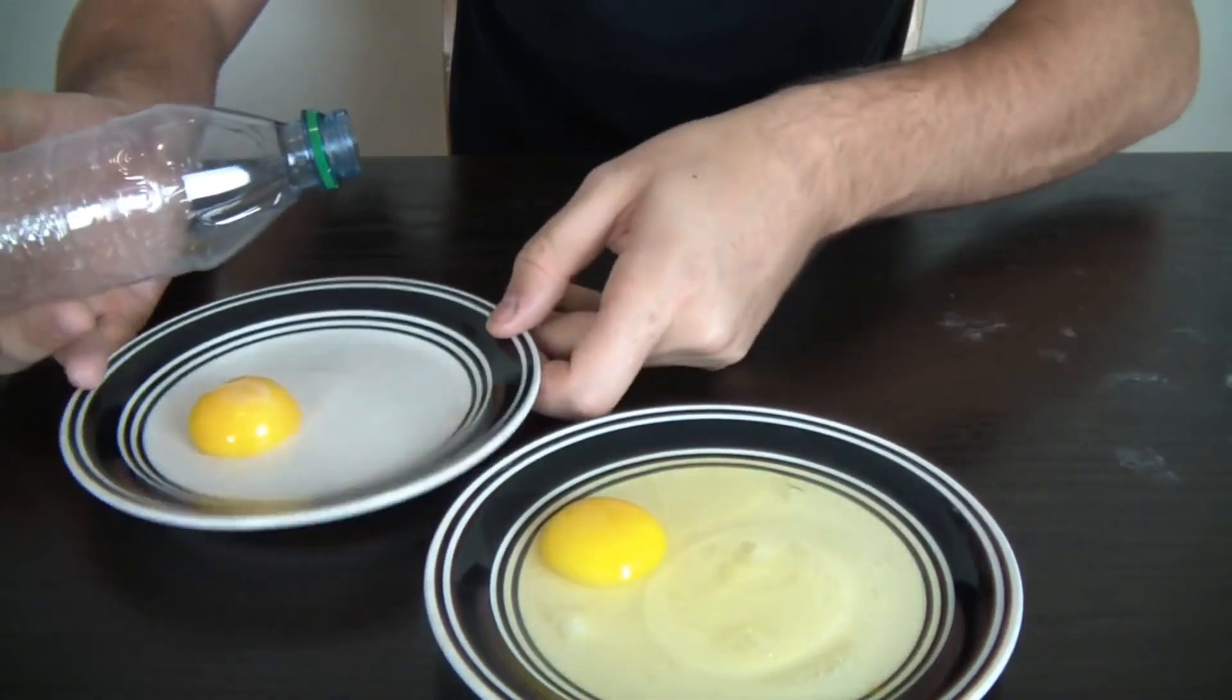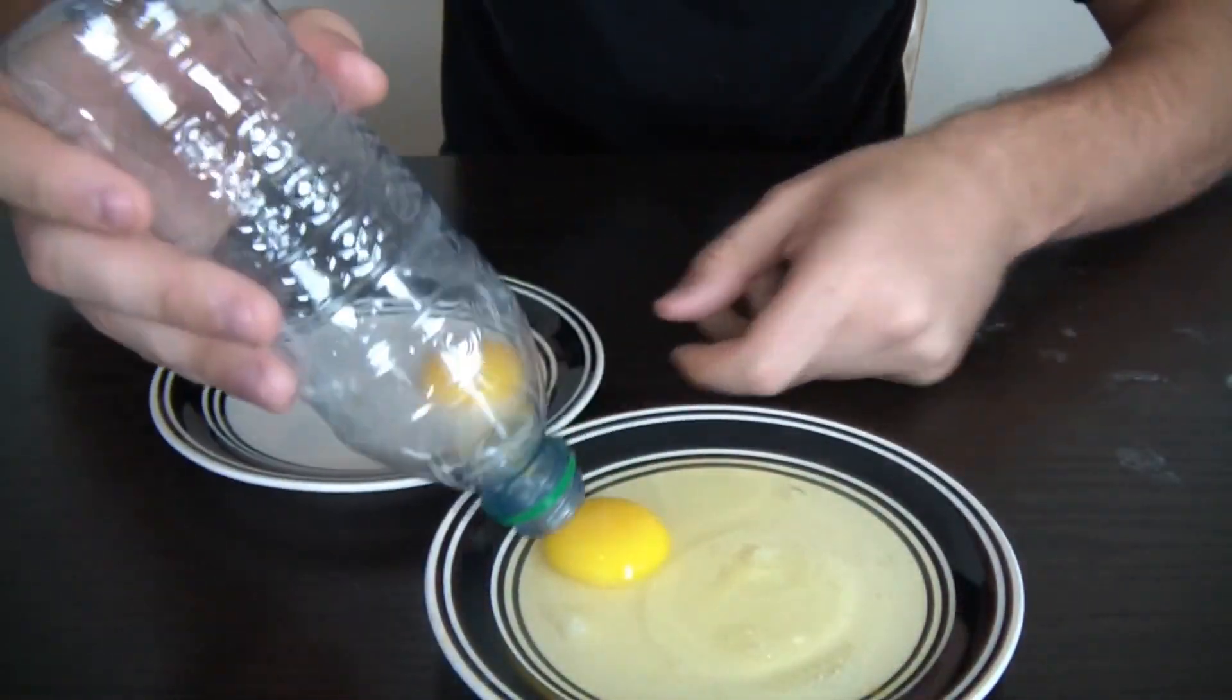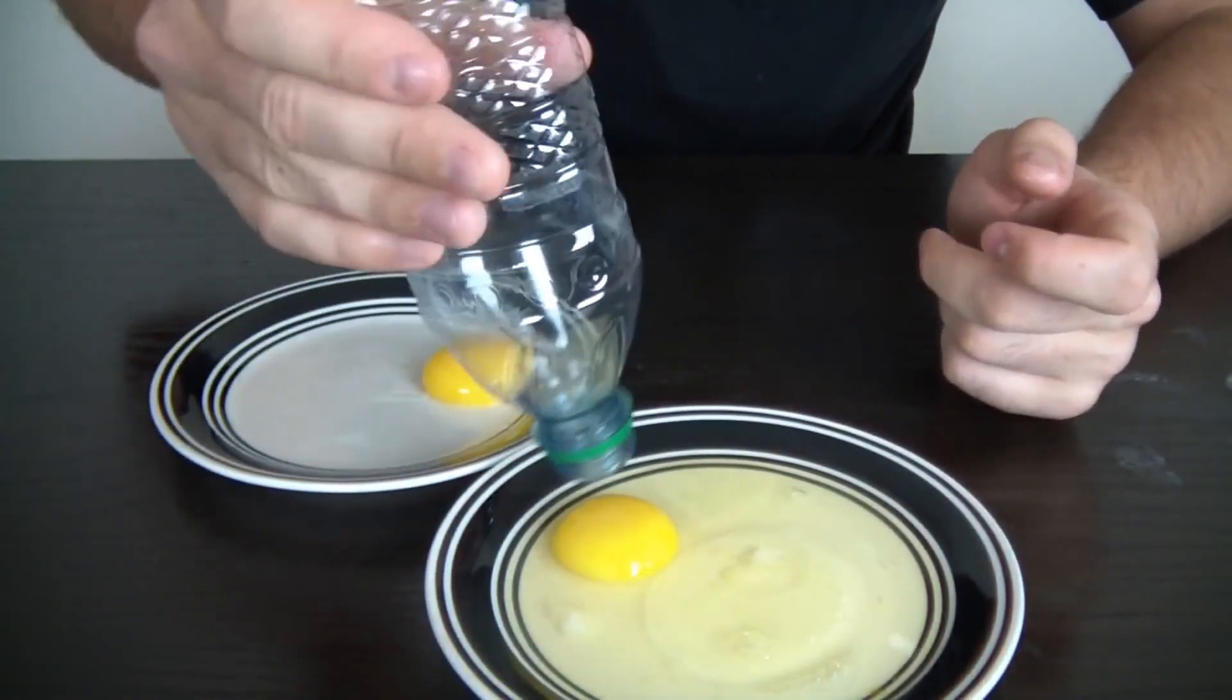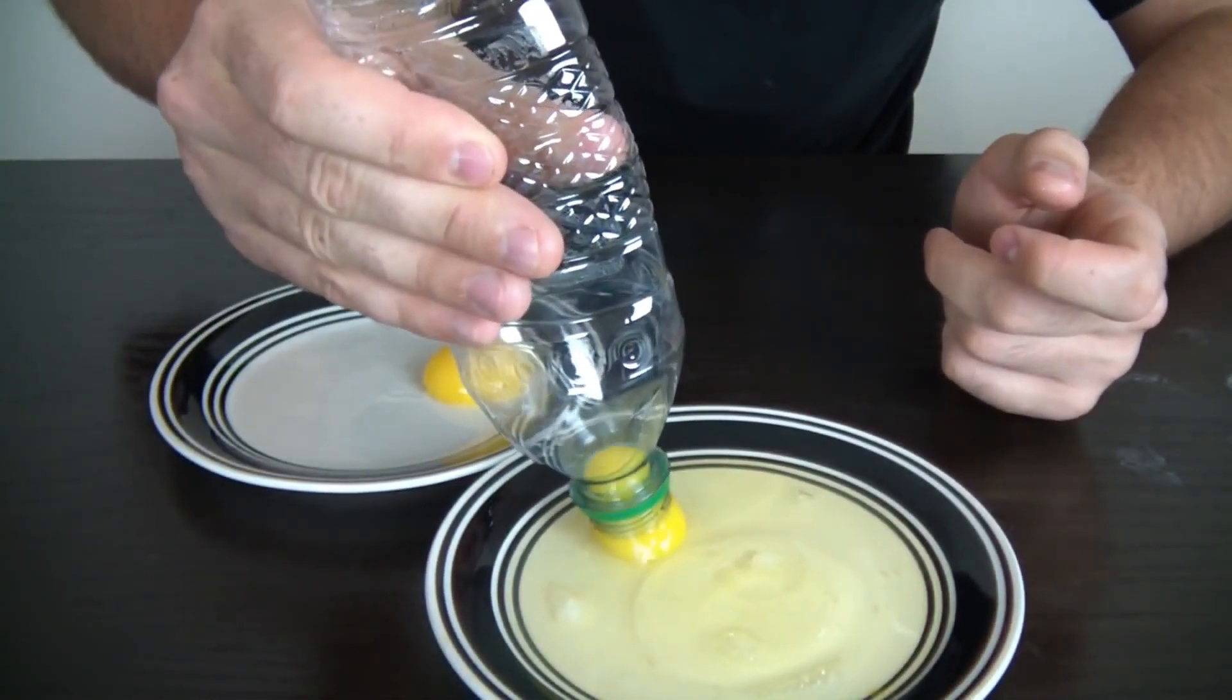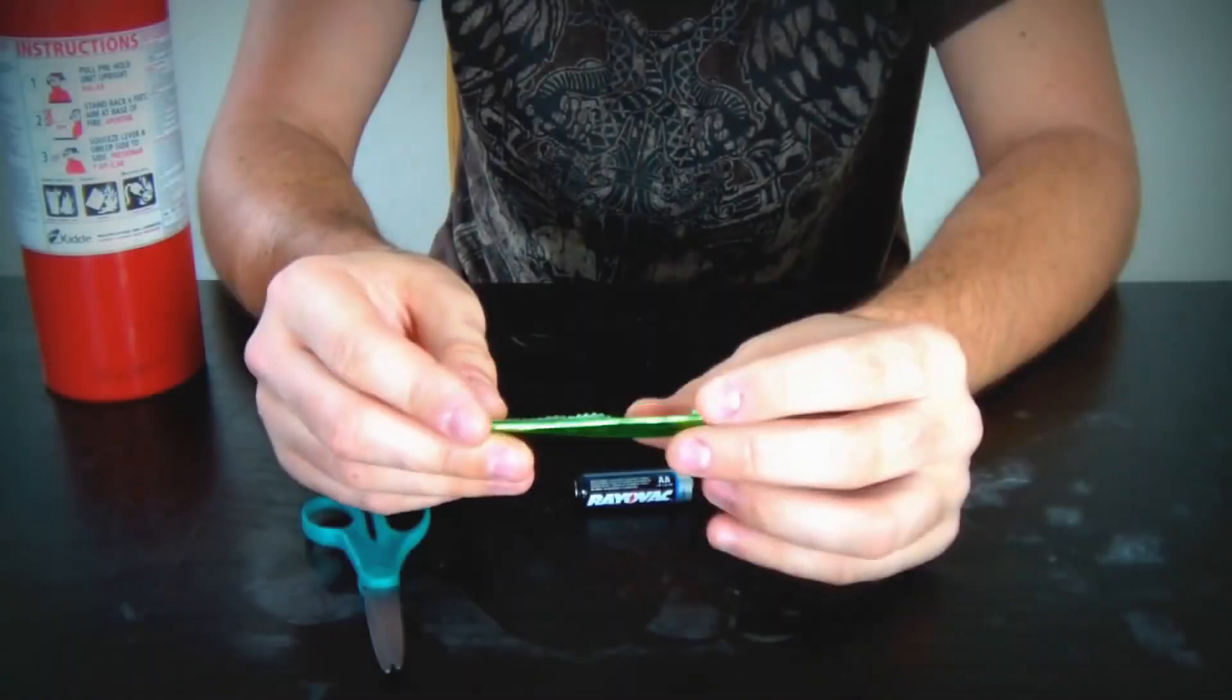Check it out, perfectly yolk egg without any white stuff. Let's try another one. Squeeze it. First thing you're going to do is unwrap your gum and you can eat it later.